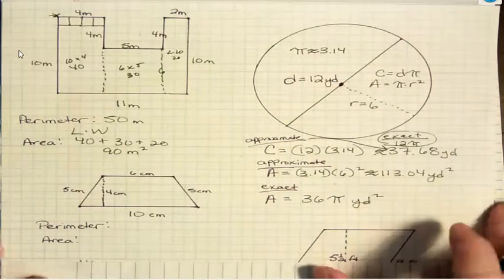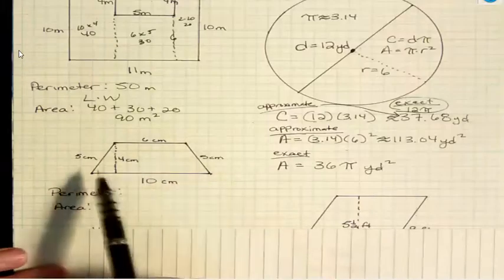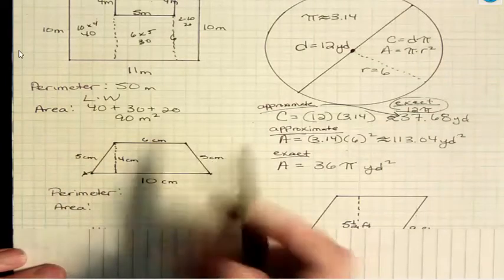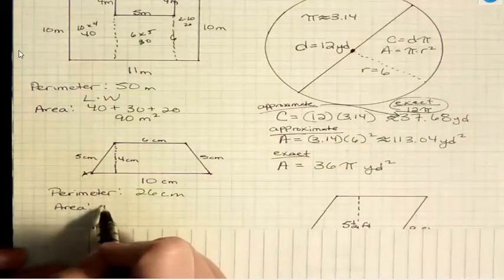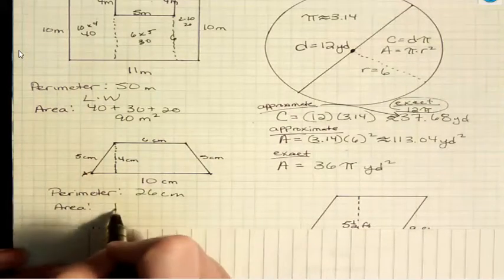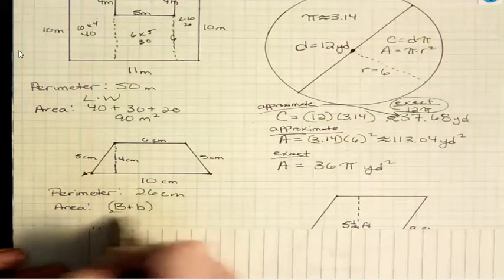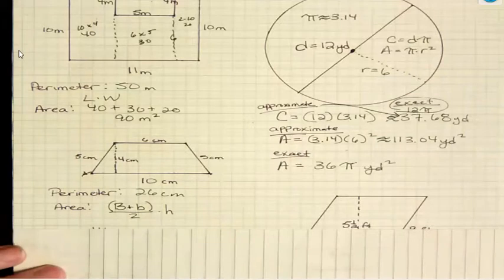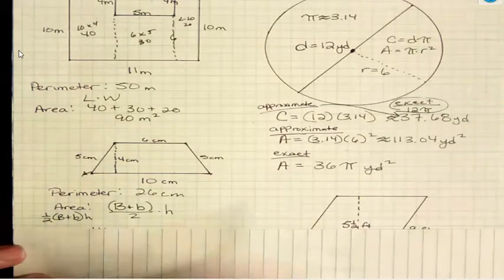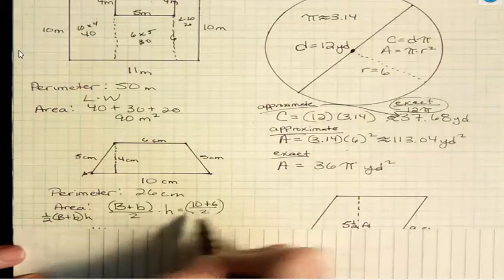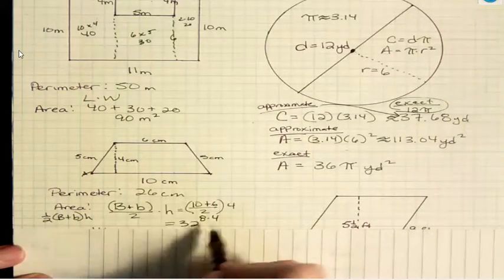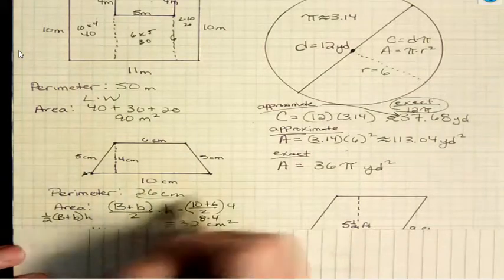For the perimeter and area of this trapezoid, for the perimeter, we just add up the sides. Five and six is 11 plus five more is 16 plus 10 is 26 centimeters. What's the area formula? The area is you have to find the average of the two bases, multiply it times the height. So you have big base plus little base divided by two times the height. We have 10 plus 6 equals 16 divided by two is eight times four or 32, and it's an area so it's centimeters squared.